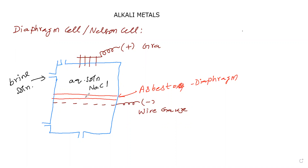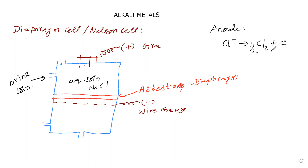Now electrolysis takes place. At the anode, oxidation occurs. The anion Cl⁻ goes to the anode, loses an electron to become a chlorine atom, then combines with another chlorine atom to form Cl₂. So chlorine gas is produced at the anode and comes out.